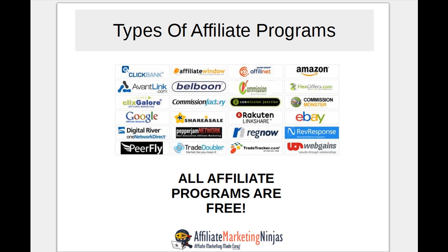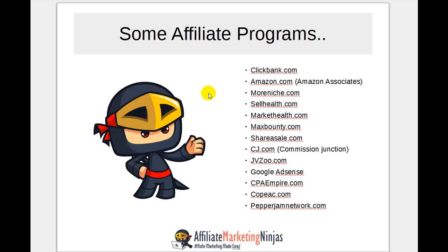I'm going to be talking about all different types of affiliate programs, but there's a few I'll mainly mention in this course. Those are ClickBank.com — a digital marketplace for digital products — Amazon.com, a massive online retail store with their Amazon Associates program. There's also MoreNiche, Sell Health, Market Health, MaxBounty which is a CPA network, ShareASale, Commission Junction, JVZoo, Google AdSense, CPA Empire, COPEC, and Pepper Jam Network. But that's just a small handful of what's out there.